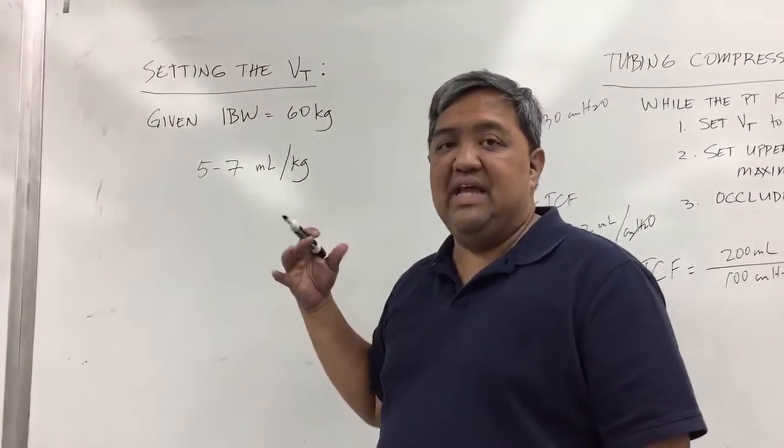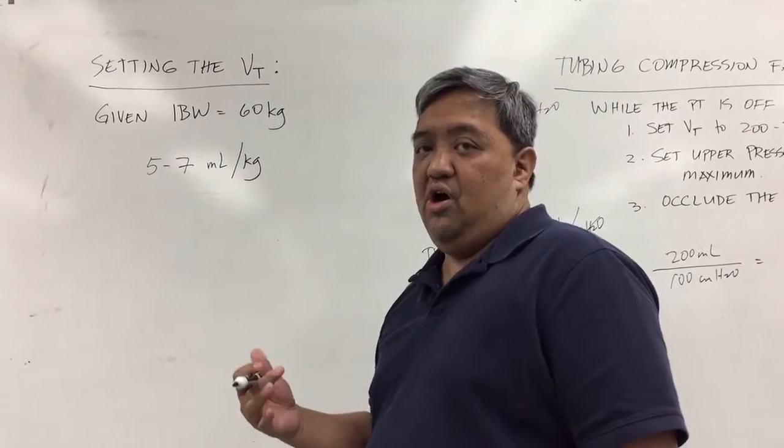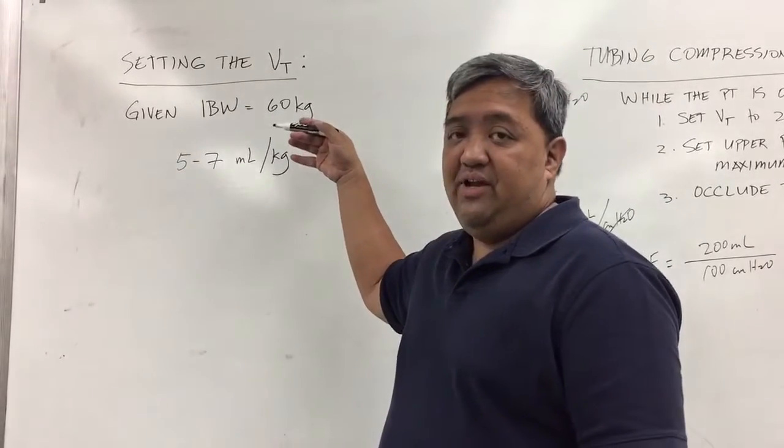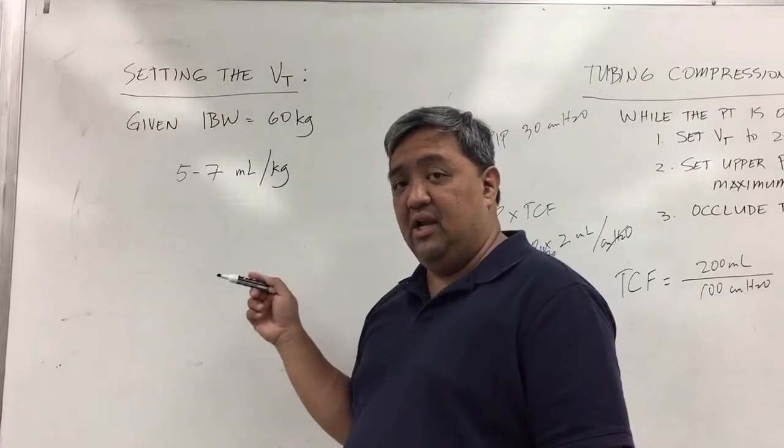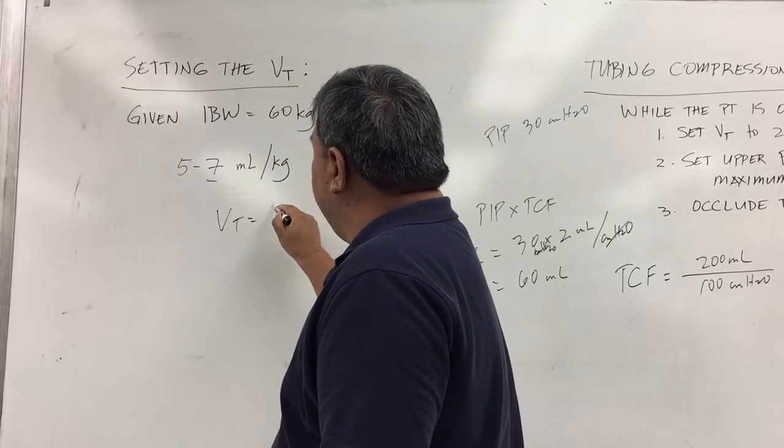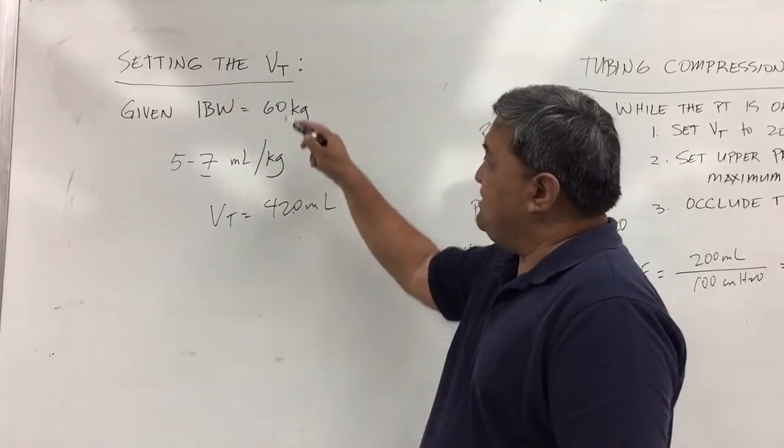Once you have a tubing volume loss, you now know what the actual volume delivered to the patient is. Let's say there's an order based on ideal body weight of 60 kilos. Using the range of 5 to 7 mls per kilo, let's use 7, so the tidal volume is 420 mls.